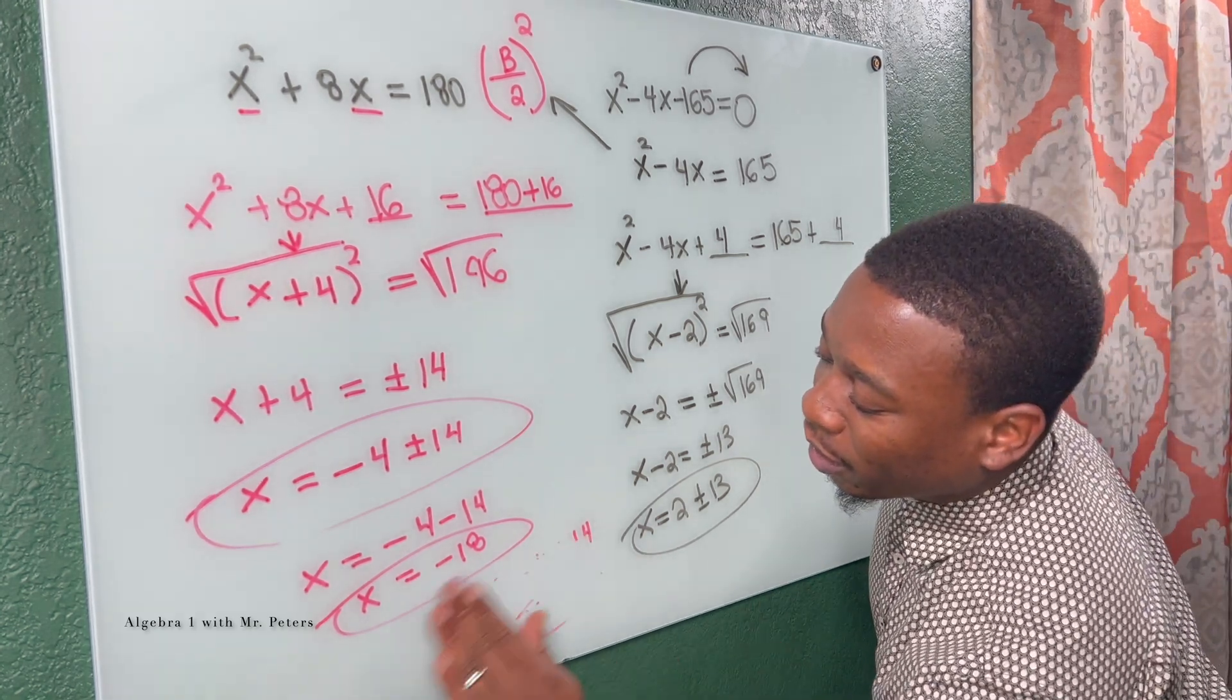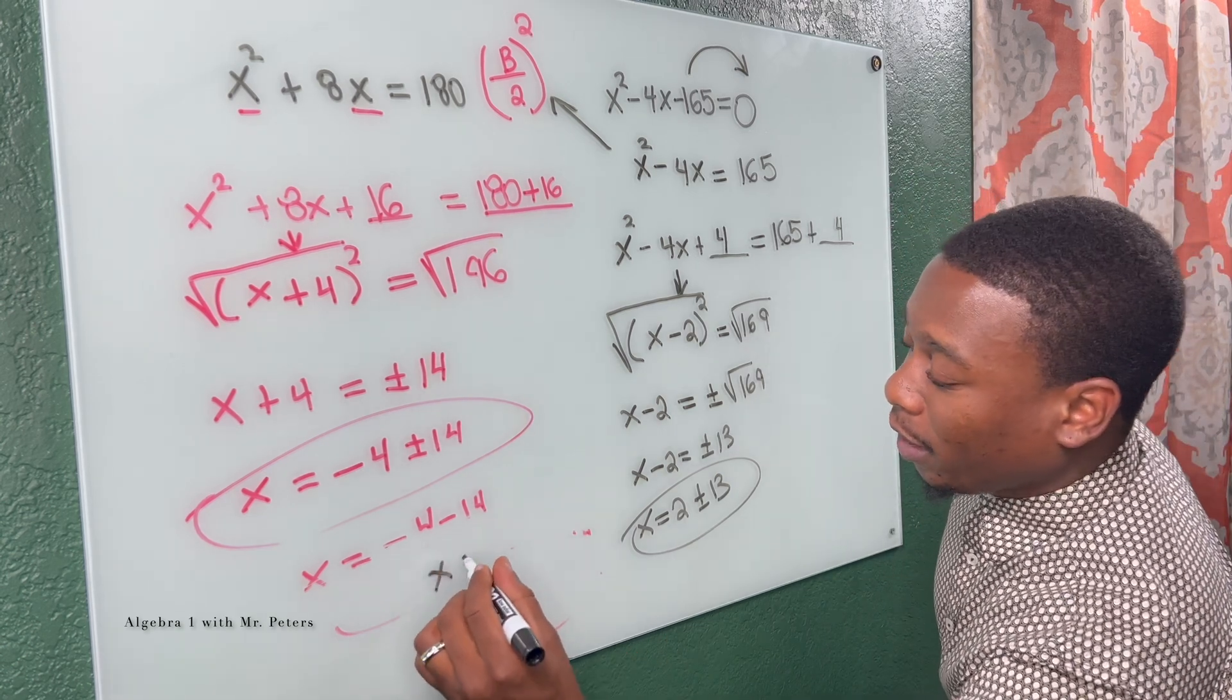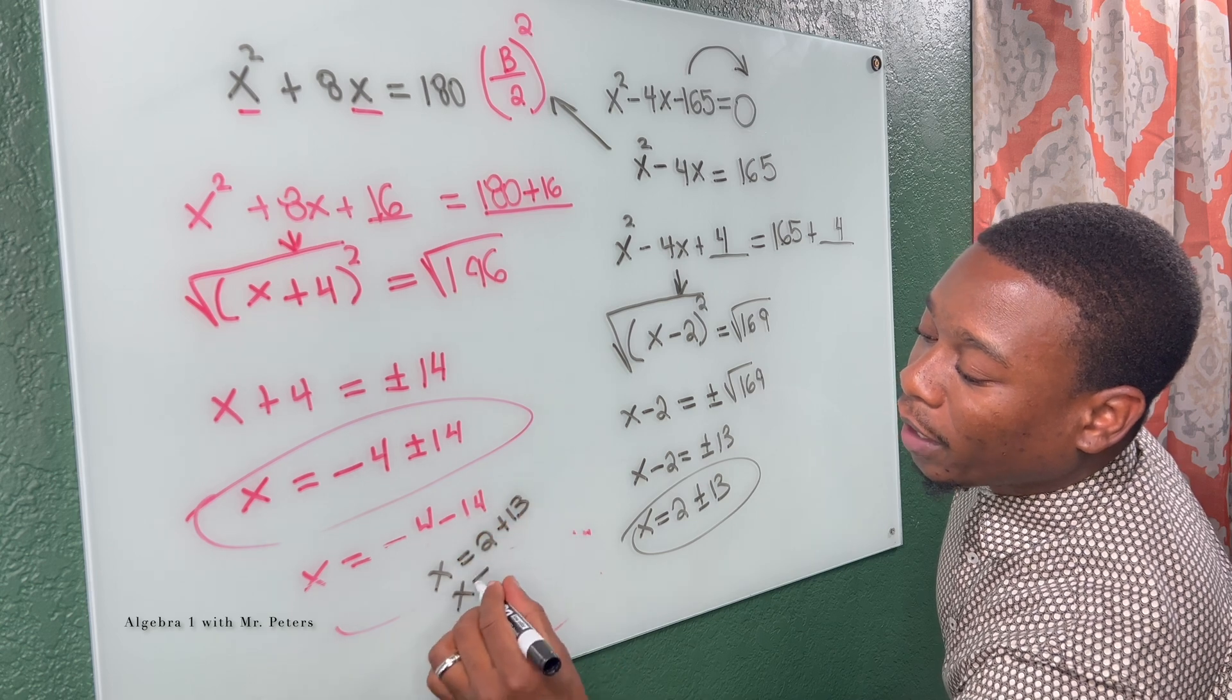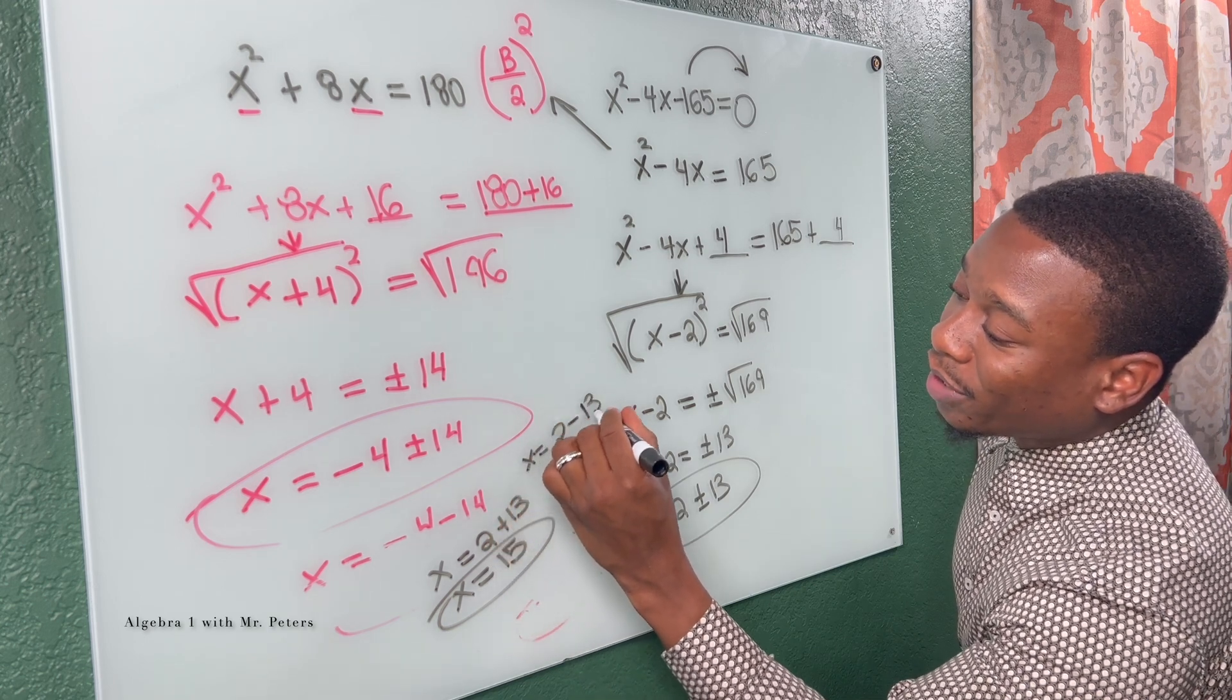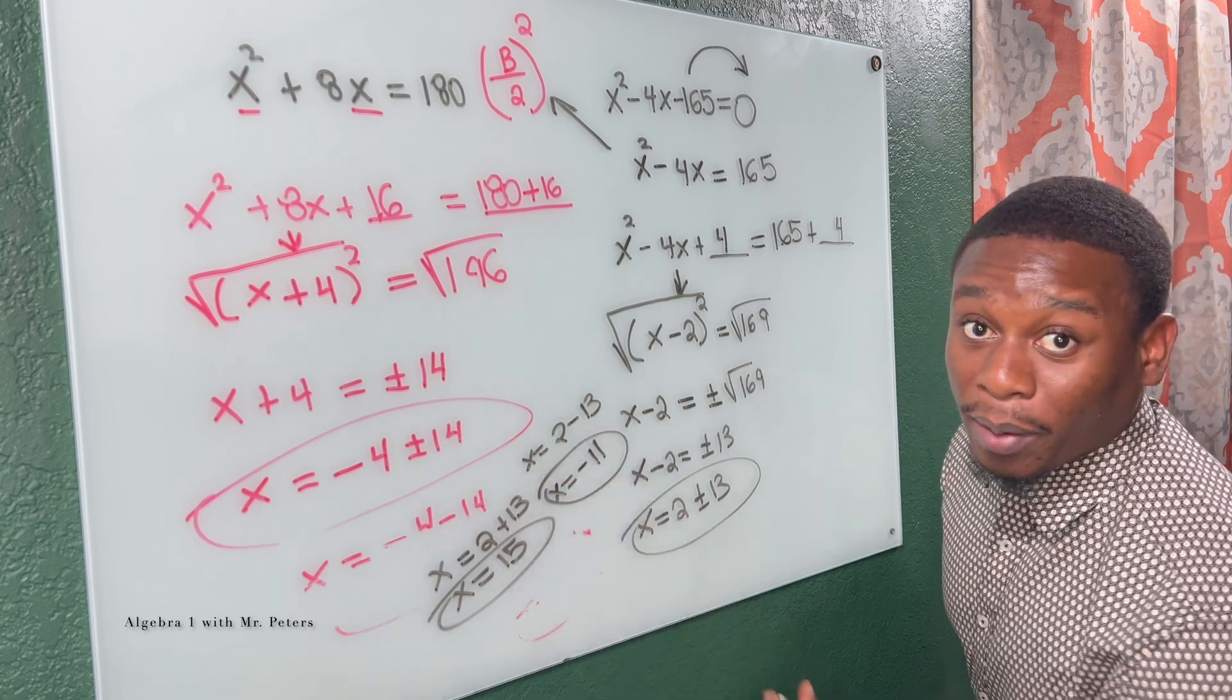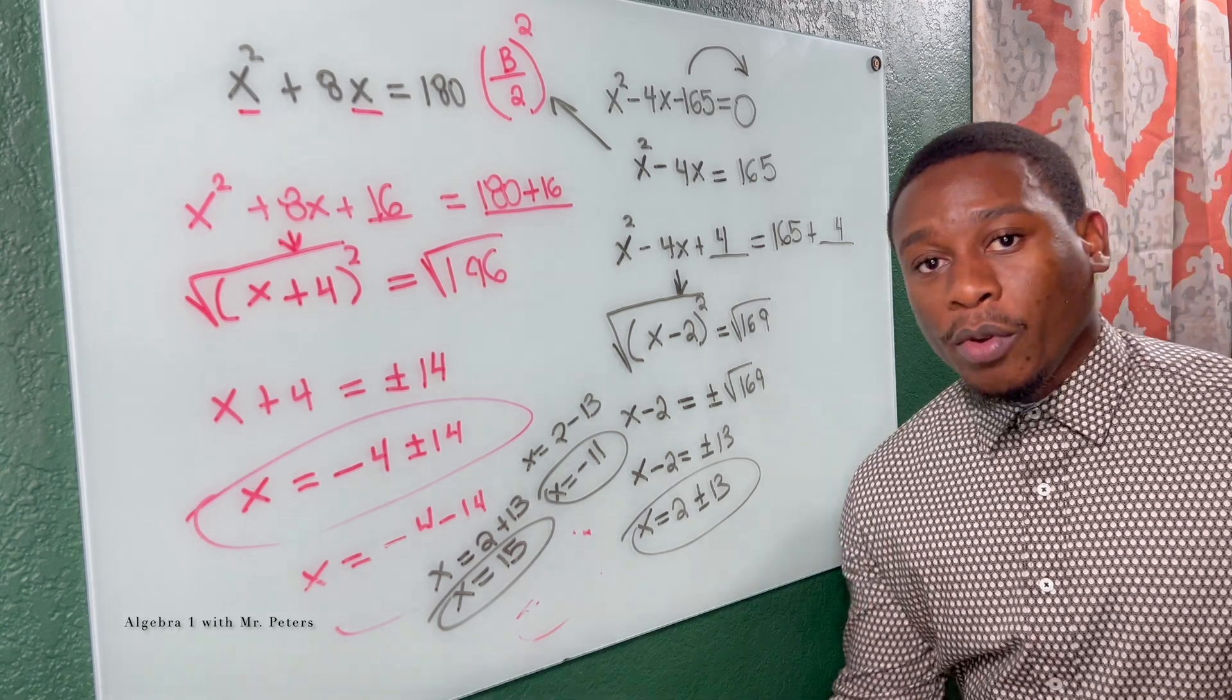we're gonna have X is equal to two plus 13, so we'll get X is equal to 15. Or we'll have X is equal to two minus 13, and we'll get X is equal to negative 11. Family, I'm sorry I jumbled this up, I don't know where I put my eraser. So now we've got those two done.